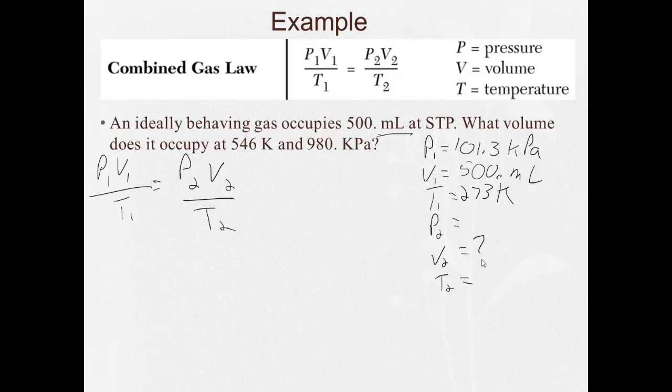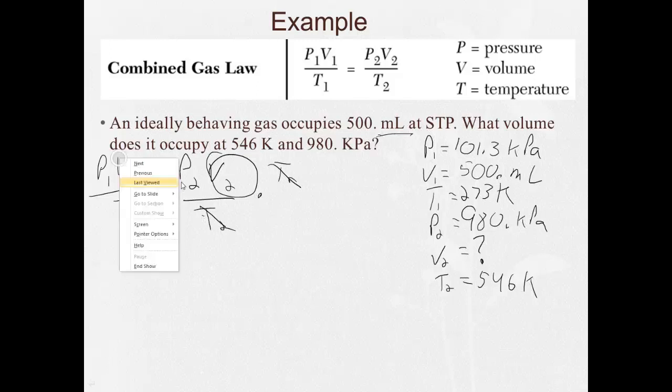What volume does it occupy at 546 K, 546 kelvins and 980 kilopascals? So, what are we solving for here? We're solving for V2. Now I have to do a little bit of algebra. I need to rearrange this just like you do in math class. So, if we multiply both sides by T2, then I cancel out here and it's up in the top here. If we divide both sides by P2, now it's on the bottom here. It's like we moved that to the bottom. We end up with V2 equals P1V1T2 over T1P2.